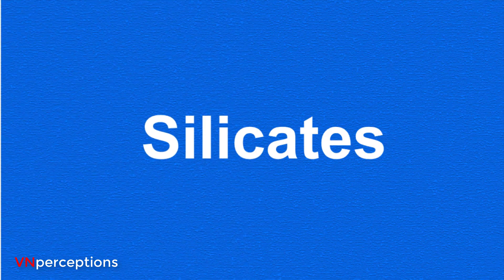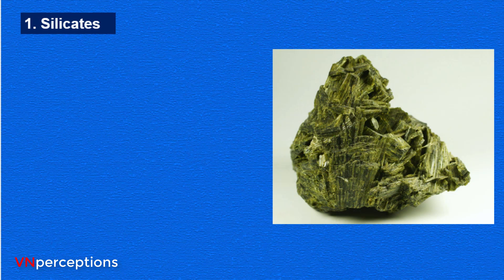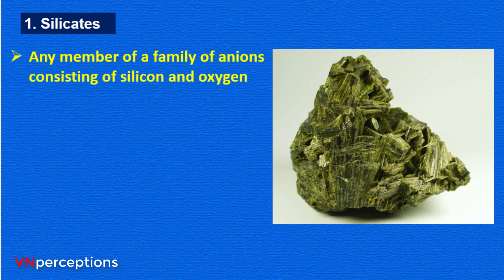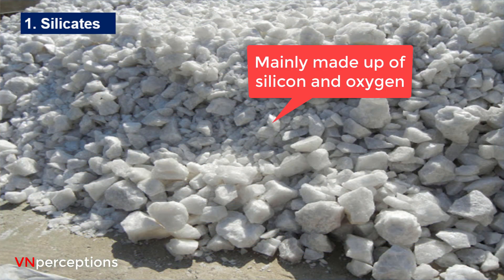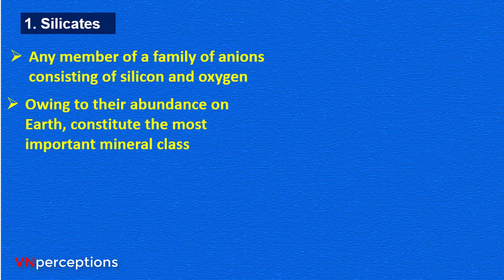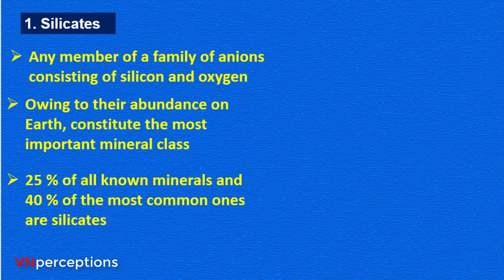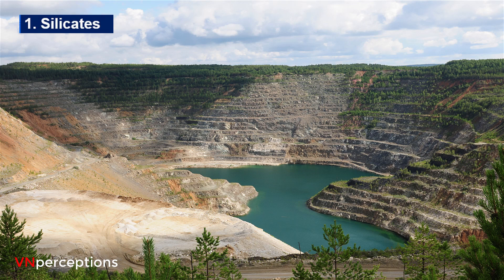Talking about the first one — silicates. In chemistry, a silicate is any member of a family of anions consisting of silicon and oxygen. So silicates are mainly made up of silicon and oxygen. Owing to their abundance on earth, silicates make up the most important mineral class. Approximately 25% of all known minerals and 40% of the most common ones are silicates. The igneous rocks that make up more than 90% of the earth's crust are composed of virtually all silicates.